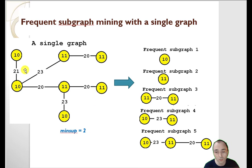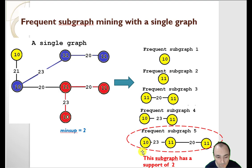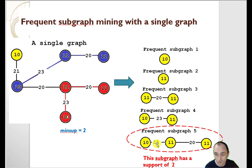Here I have a single graph and I set the minimum support to two. As a result I will find some subgraphs, like you can see on the right. Let's take one of these subgraphs as an example — it appears twice: here is one occurrence and here is another occurrence. So this subgraph has a support of two, it is at least two, so it is a frequent subgraph.